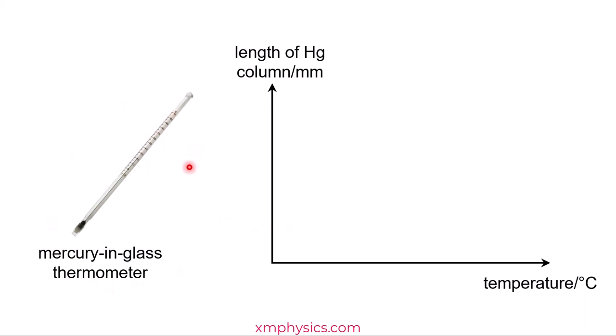So to calibrate the mercury in glass thermometer is to note the length of the mercury thread at ice point and at steam point and divide everything between the ice points and the steam points into 100 equal intervals.